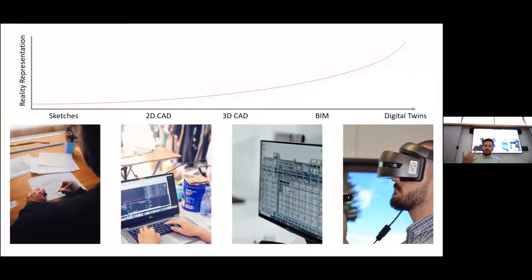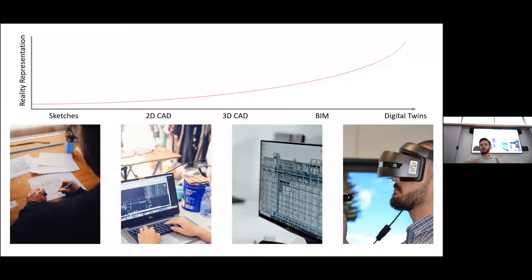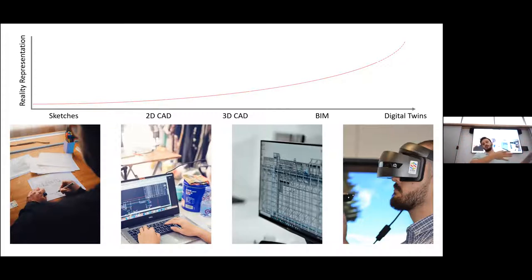We're trying to make our building designs more and more representative of reality. With sketches you had an idea; with 2D CAD more information; with BIM even more. The next step is trying to replicate the physical building in a digital format — a digital twin — making it as realistic as possible, which opens up more and more benefits.